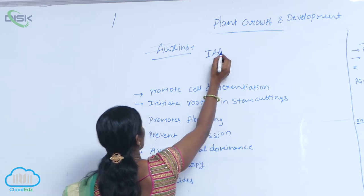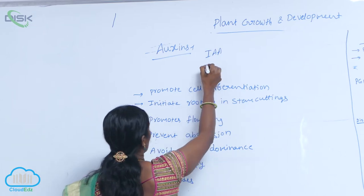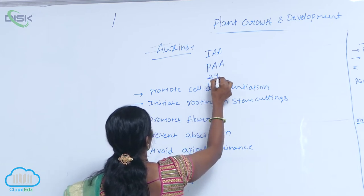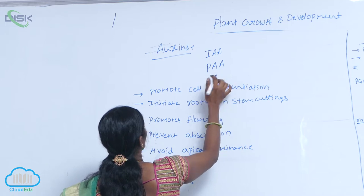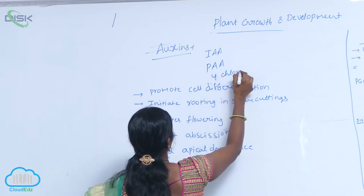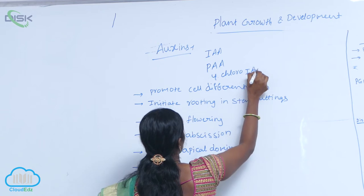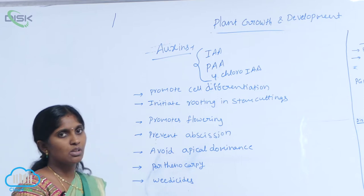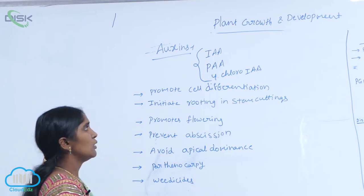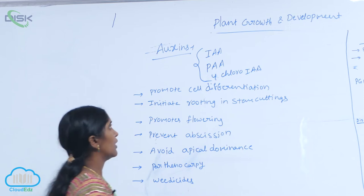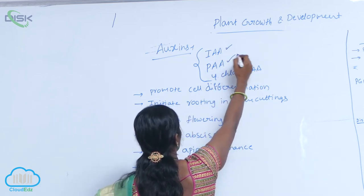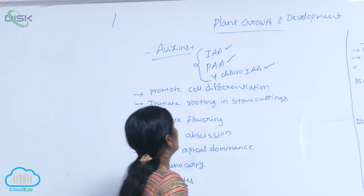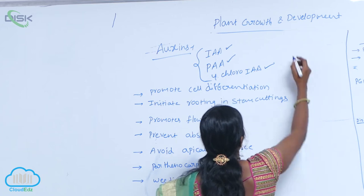The natural auxin is IAA, indole acetic acid; PAA, phenol acetic acid; and 4-chloro-IAA, 4-chloro-indole acetic acid. These are the natural auxins.